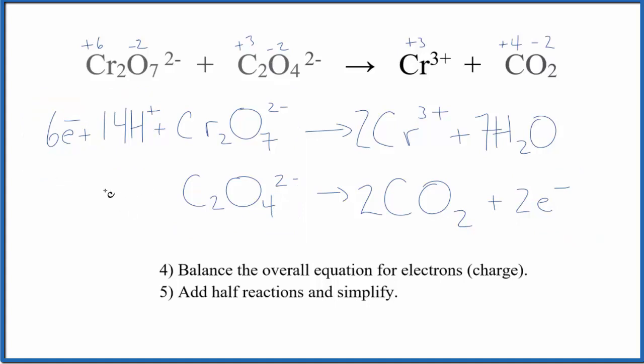We're going to multiply this whole half reaction by three. Three times two electrons is six electrons. Here we'll have six electrons to balance these. But everything gets multiplied by three to maintain the same ratio.